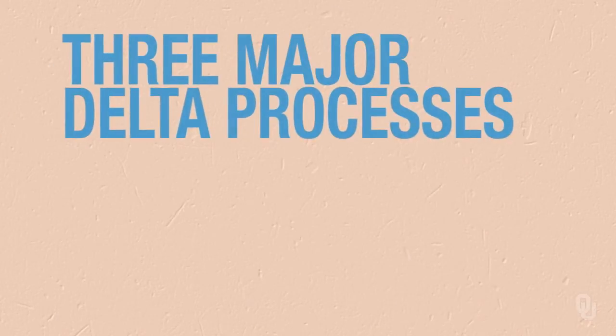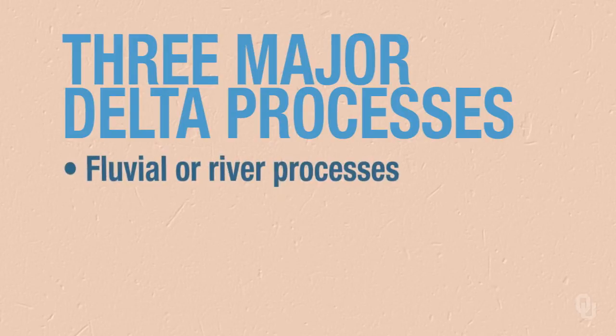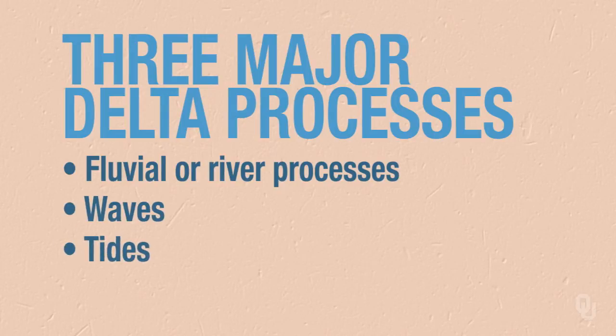There are three major processes that operate in a delta: fluvial or river processes, wave processes, and tides.